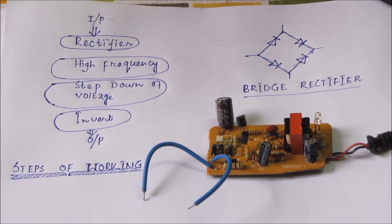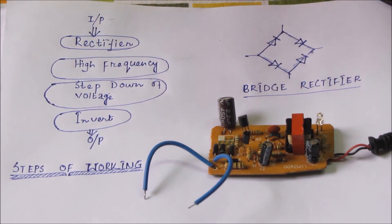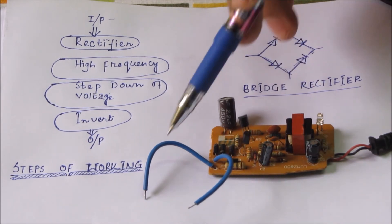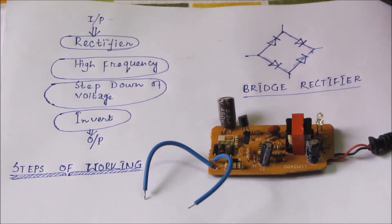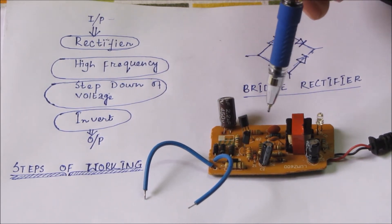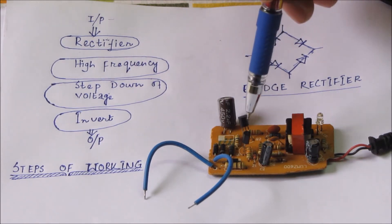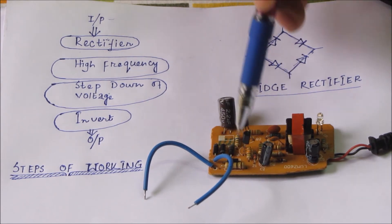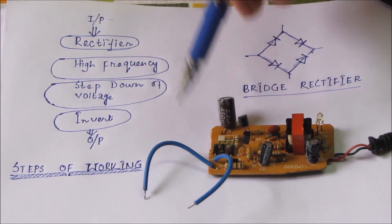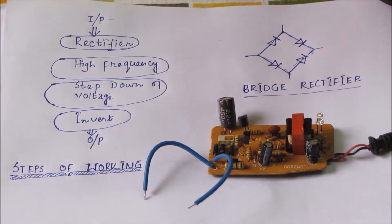As soon as the input voltage changes, the output voltage changes in ratio to maintain it. This is a very miniature transformer. The question comes to mind: if AC input is given and then the same input is again given to the transformer, what was the need for bridge rectifiers, transistors, large capacitors, and all these electronic components? The simple answer is: this is a switching mode power supply, or SMPS.